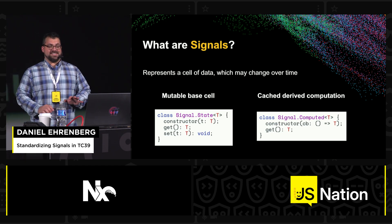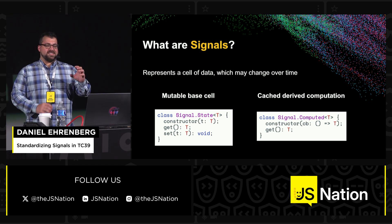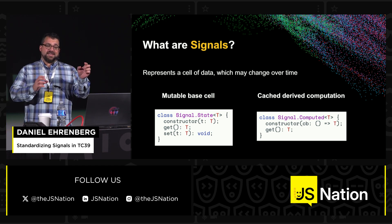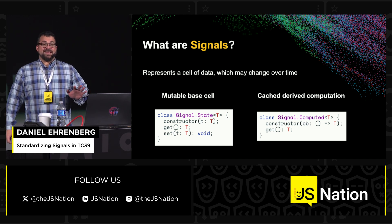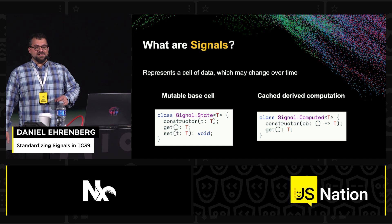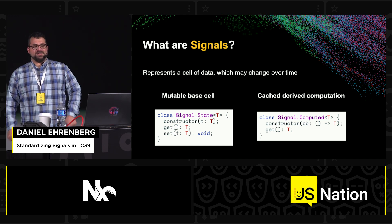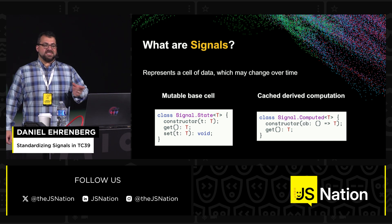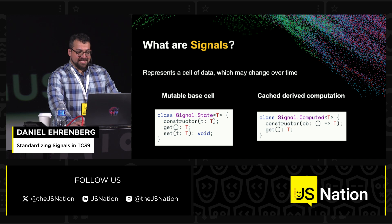Signals represent a cell of data which may change over time. You have a mutable base cell called state, which you can create, get, or set values on. Then a cached derived computation called a computed signal, which is created by passing in a function, and you have a way to get the value of it. These are the APIs used in the standard signal proposal.